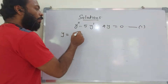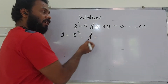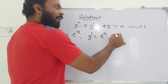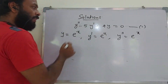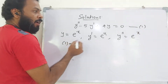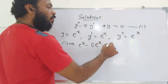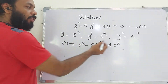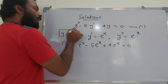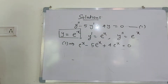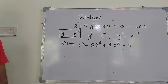Suppose we have the relation y = e^x. Then y' = e^x and y'' = e^x. Substituting into equation 1: e^x - 5e^x + 4e^x = 5e^x - 5e^x = 0. So the relation y = e^x satisfies the given differential equation, and y = e^x is a solution.